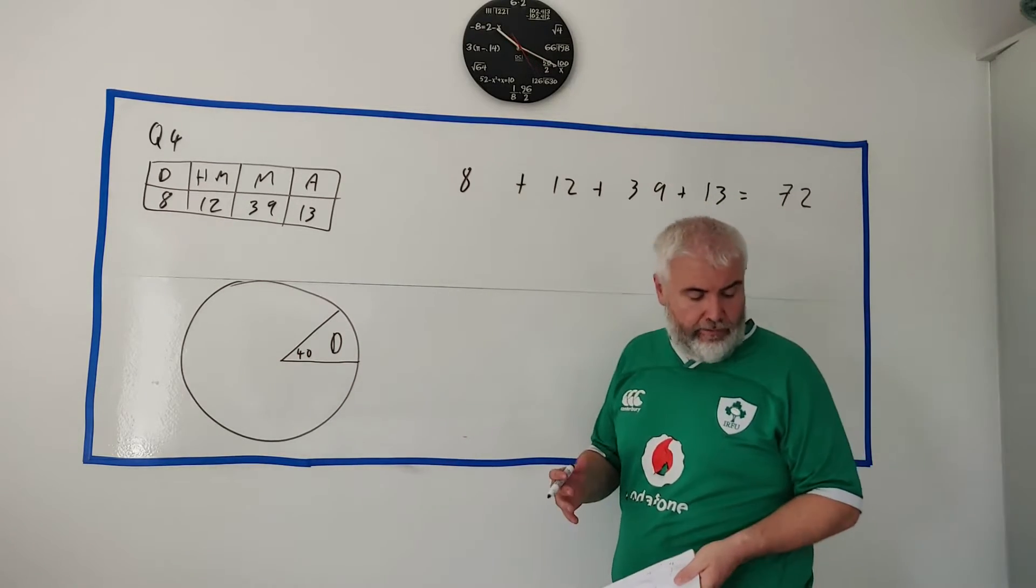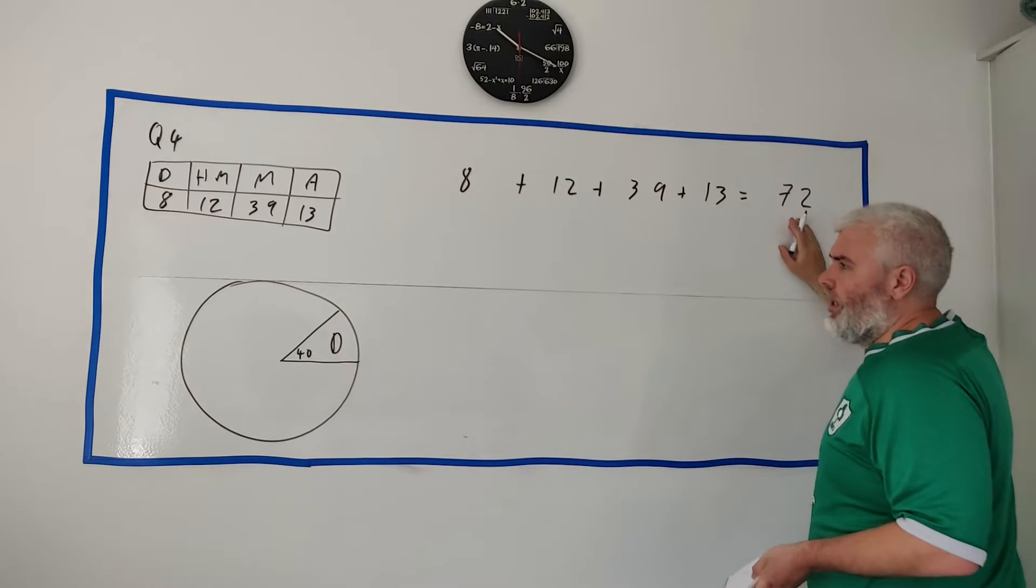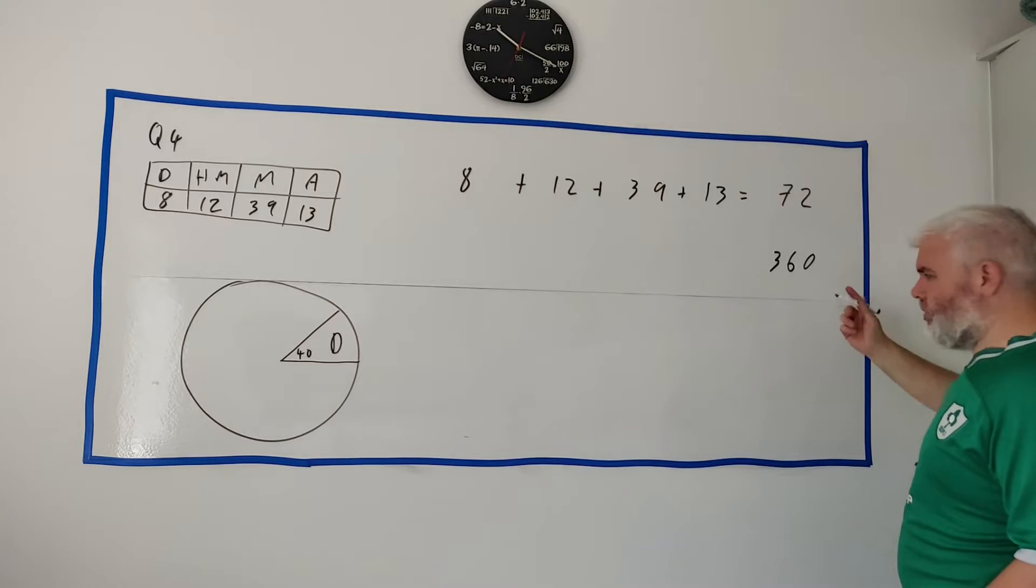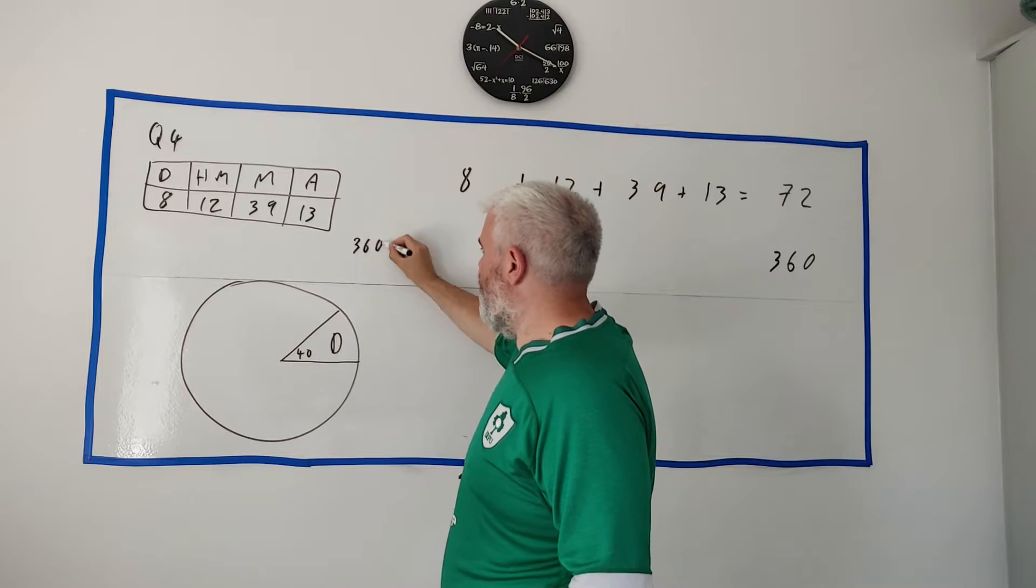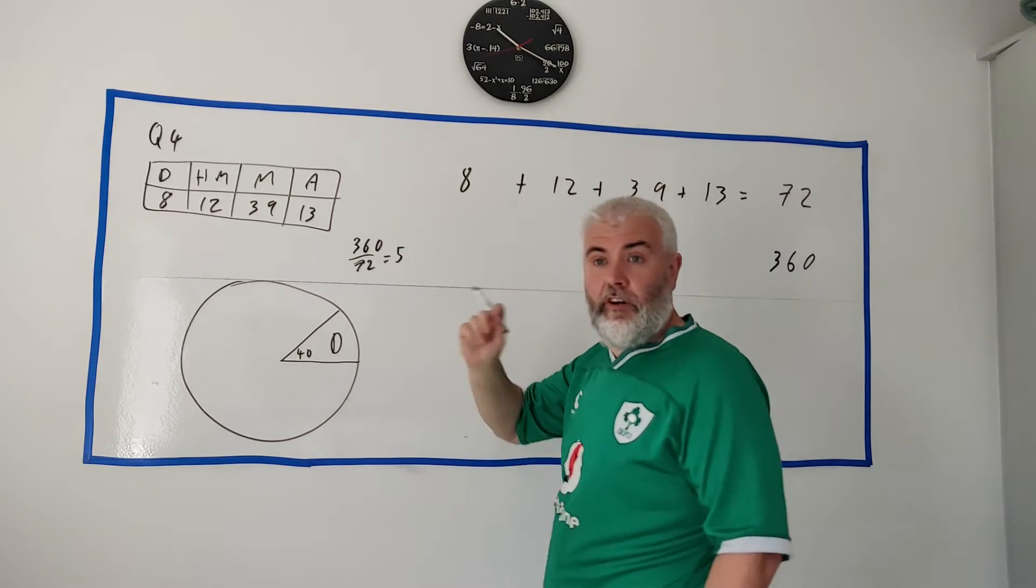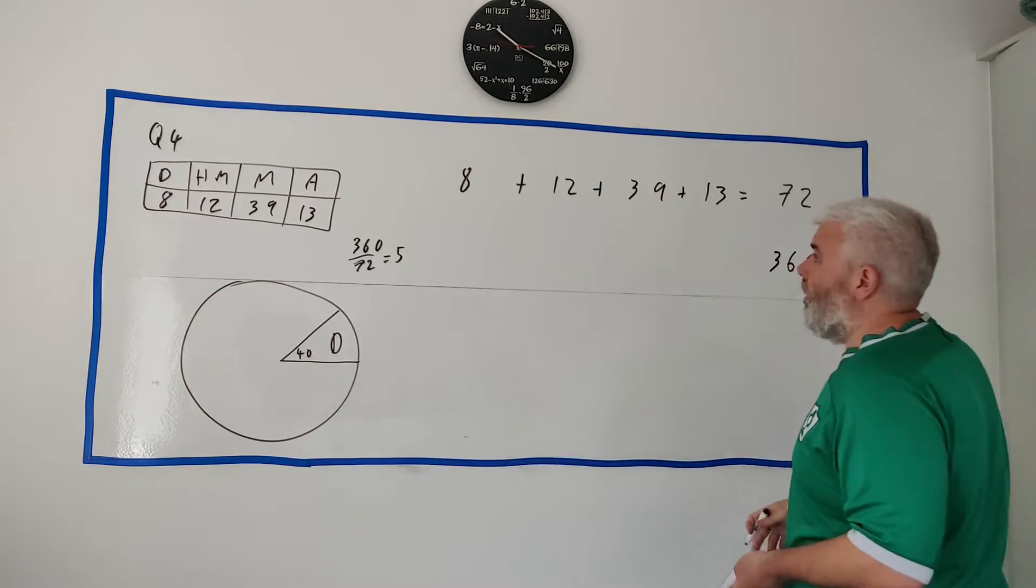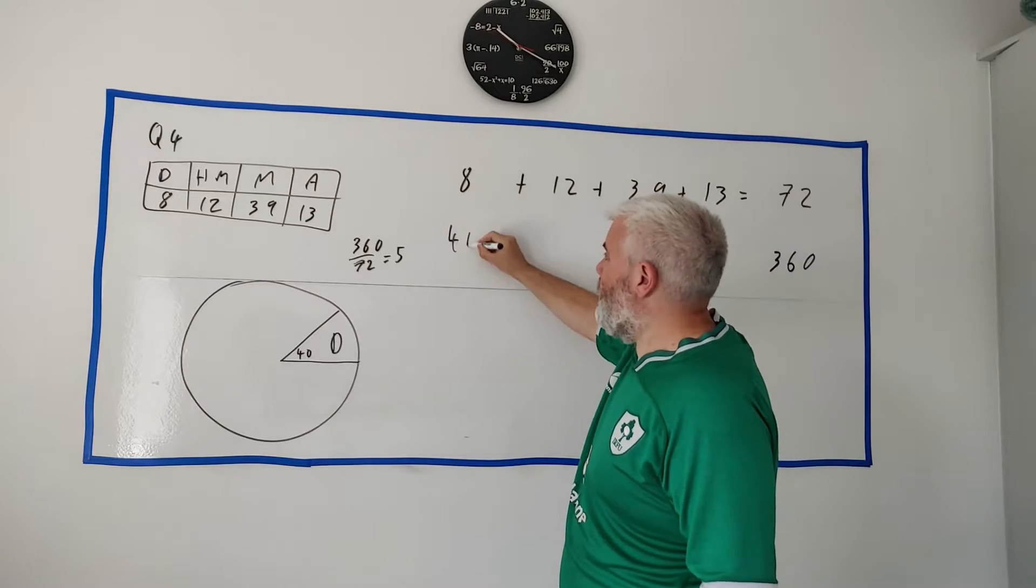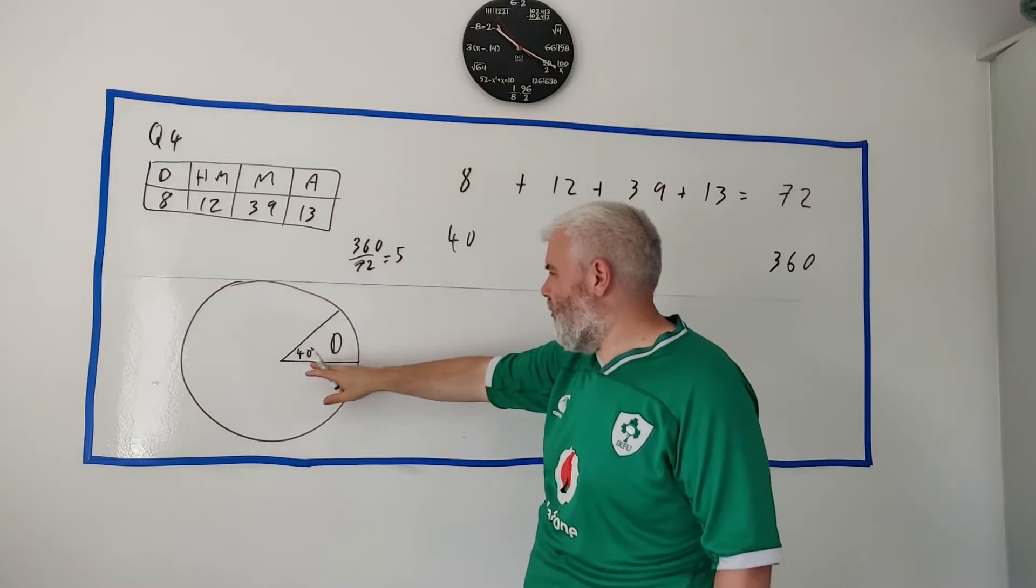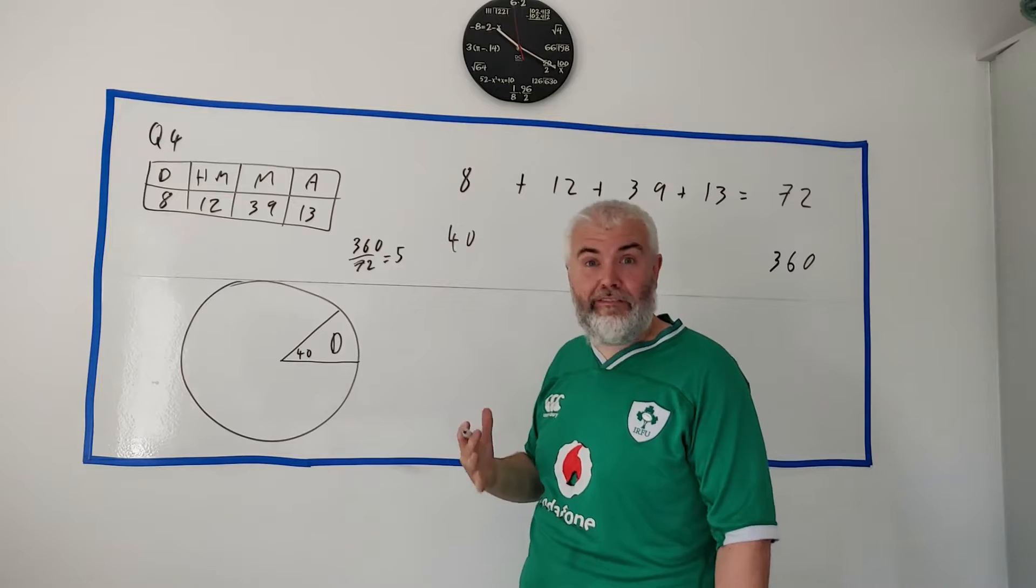But how we would get it from the very start if they didn't give us that, we know there's 72 students and we know a circle adds up to 360. So if we just divide it, 360 divided by 72, that equals 5 degrees for every student. Every student is going to get 5 degrees of this circle. So 8 students will get 40 degrees and that's how we could have done from the very start. We could have just divided 40 by 8 to get again 5 degrees per student.